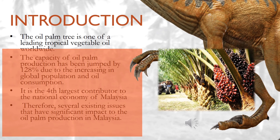The oil palm tree, Elaeis guineensis, an indigenous crop cultivated in West Africa, is one of the leading tropical vegetable oils worldwide. The capacity of oil palm production in total has jumped by 128%, growing strongly to 58 metric tons per year over the last decade due to increasing global population and oil consumption.